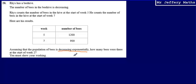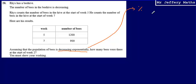We're asked how many bees there were at the start of week 2. I'll focus on the phrase 'decreasing exponentially.' This means the number of bees will decrease very sharply at the beginning and then slow down as time goes by. We can think of this almost like a percentage reduction — it's a bit like compound depreciation, a percentage reduction that is repeated.